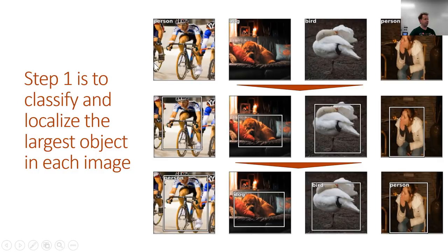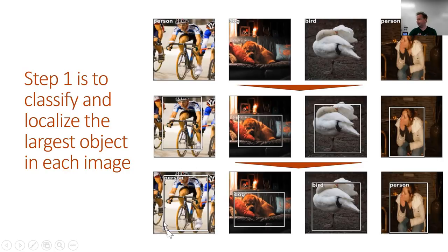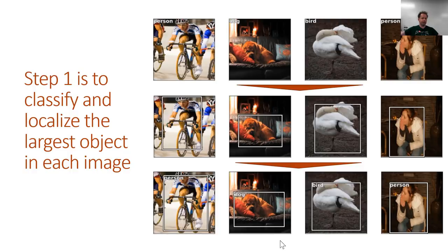One key thing I wanted to mention: we started with something pretty simple — a single object classifier, single object bounding box without a classifier, and then single object classifier and bounding box. The bit where we go to multiple objects is actually almost identical to this, except we first have to solve the matching problem. We end up creating far more activations than we need, and we match each ground truth object to a subset of those activations. The loss function for each matched pair is then almost identical.